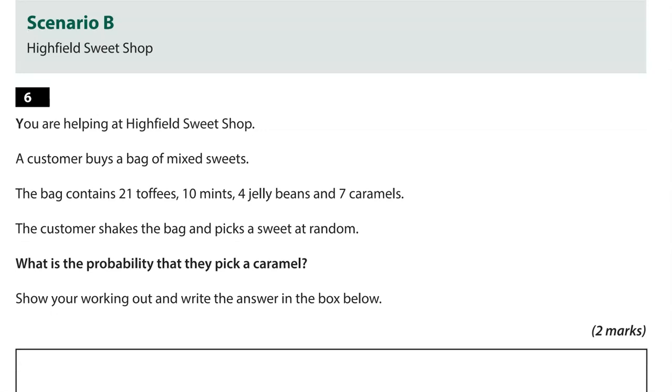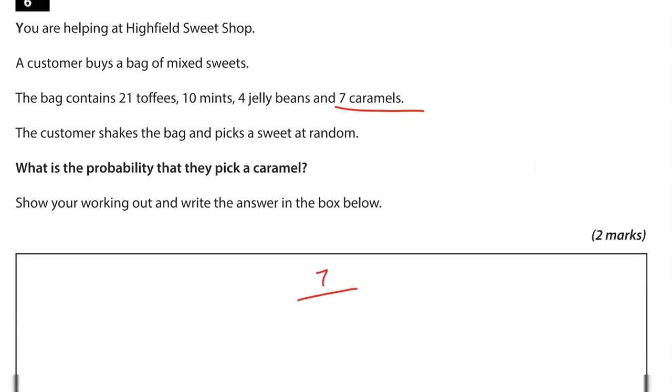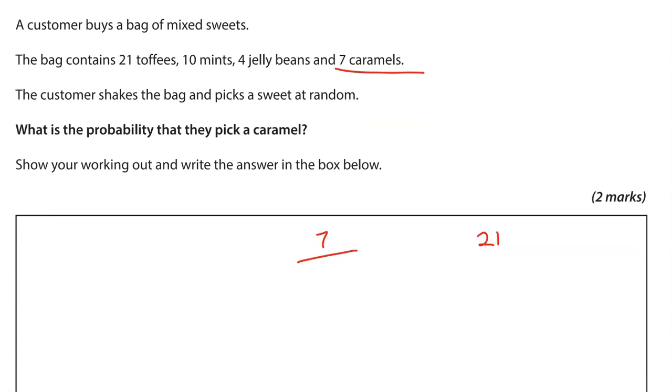You're helping at Highfield Sweet Shop. A customer buys a bag of mixed sweets. The bag contains 21 toffees, 10 mints, 4 jelly beans and 7 caramels. The customer shakes the bag and picks a sweet at random. What is the probability that they pick a caramel? So caramel, that is 7 of them out of the total. So in total, we have 21 toffees, 10 mints, 4 jelly beans and 7 caramels. So adding these together. 7 and 4, that is 11. And the 1, that is 12. So 2 down and 1 carried over. 2 and 1, 3 and the 1, 4. So 7 out of 42.